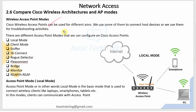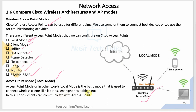Now let's look at AP modes. There are several AP modes to know: Local mode, Client mode, Sniffer mode, SE Connect, Rogue Detector, FlexConnect, Bridge mode, and Monitor mode. Local mode is the basic access point mode - it is used to connect wireless devices like laptops, smartphones, and tablets. Local mode is essentially self-contained.